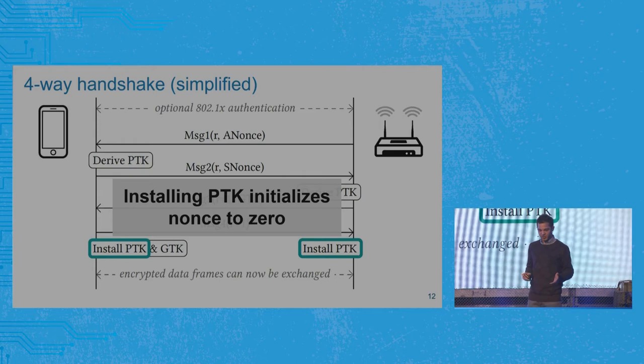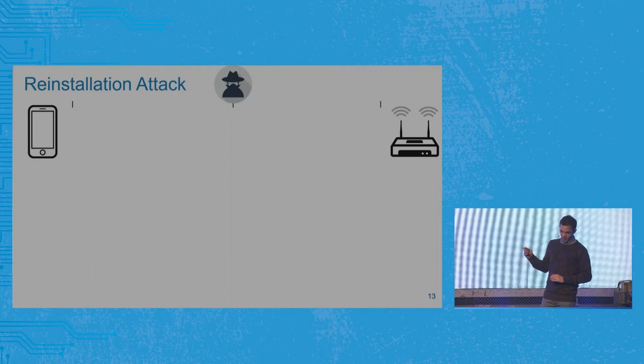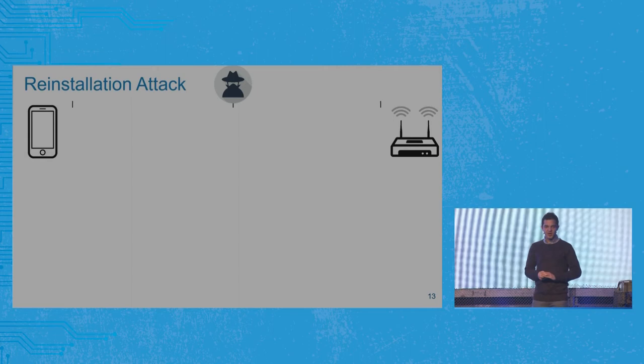However, we did find a way to trick the client into reusing this packet number, and that brings down the security of this protocol. So how did we manage to do that? Let's take the following scenario: we have a client that wants to connect to an access point, but now there's also an attacker present in the middle.